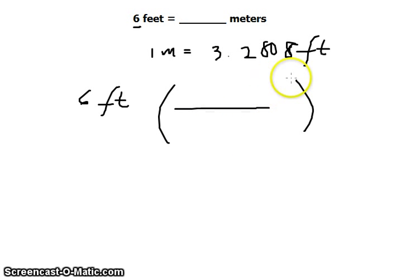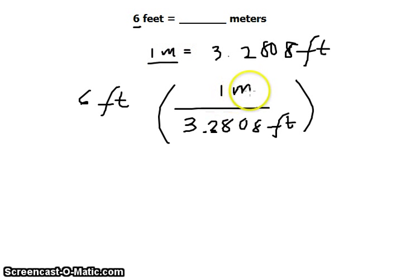The desired unit would be in the numerator and the unit you need to cancel would be in the denominator. So we would like to cancel feet, so we put 3.2808 feet in the denominator. Our desired unit is meters, so we put one meter in the numerator.